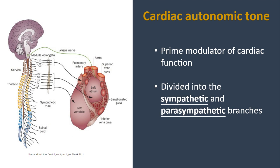The autonomic system regulates and controls many processes we're not normally aware of — unconscious functions such as respiration, digestion, and heart rate. When we talk about autonomic tone, we talk about the prime modulator of cardiac function, meaning it controls everything your heart does when the situation demands it — whether you need to increase or decrease your heart rate. It's basically divided into two main branches: the sympathetic and the parasympathetic.